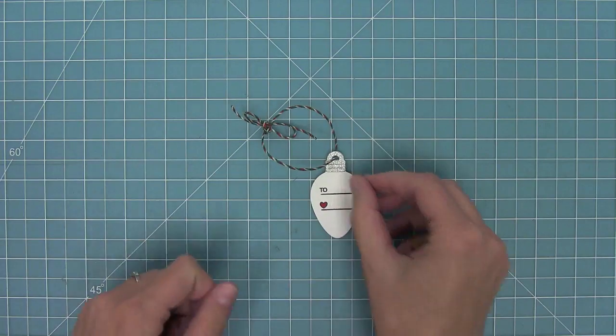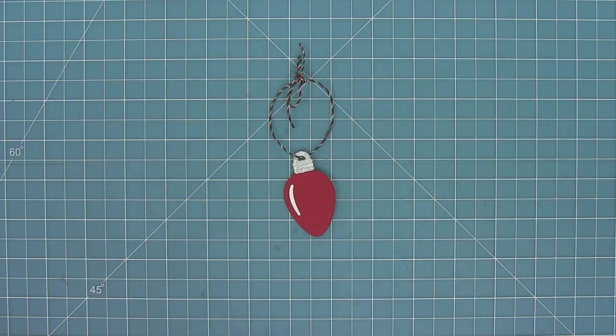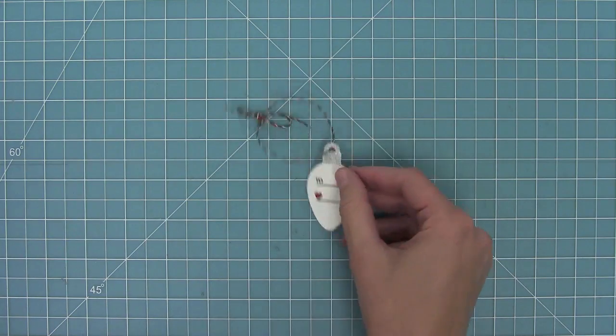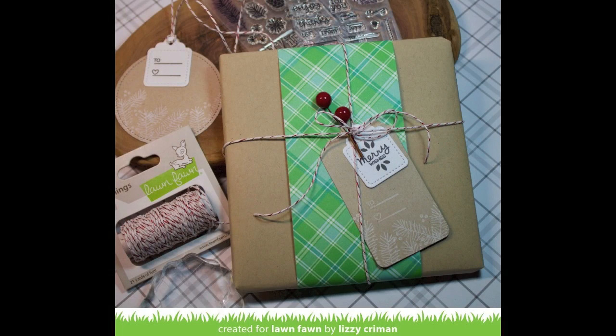I also love that this set can work with other dies. So here is the String of Lights light bulb and the tiny tag fits perfectly on it. So check out your other dies and see what tiny tags is going to work with.